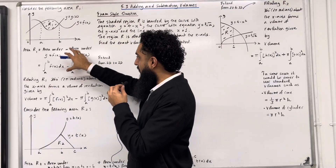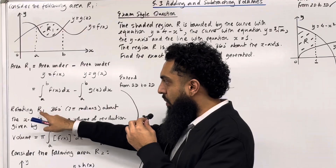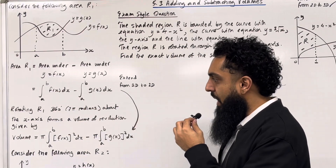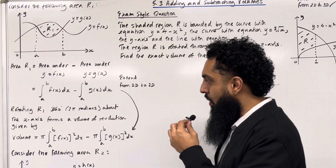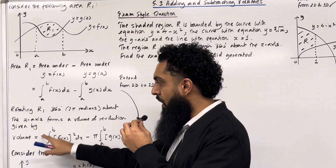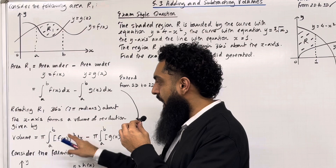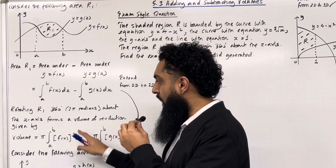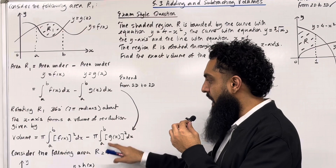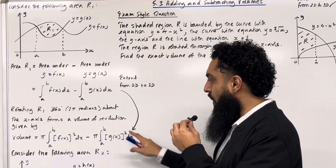We can now extend from 2D to 3D. Rotating the area R1 360 degrees, which is equivalent to 2π radians, about the x-axis forms a volume of revolution given by: volume = π multiplied by the integral from a to b of [f(x)]² dx, take away π multiplied by the integral from a to b of [g(x)]² dx.